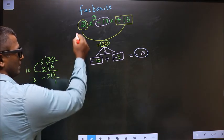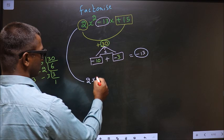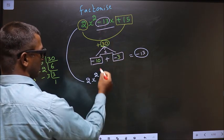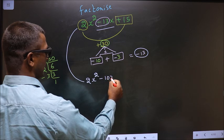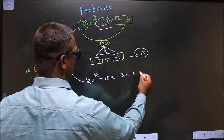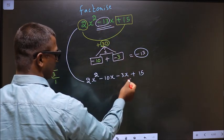Now this will change. In place of -13x, now write -10x - 3x + 15.